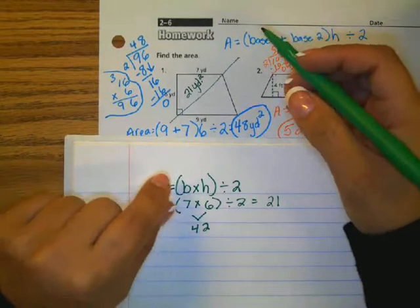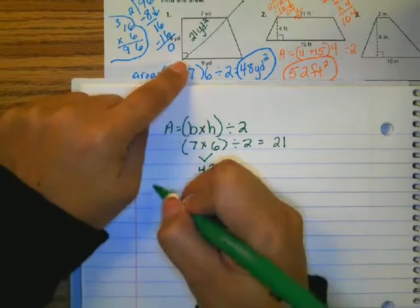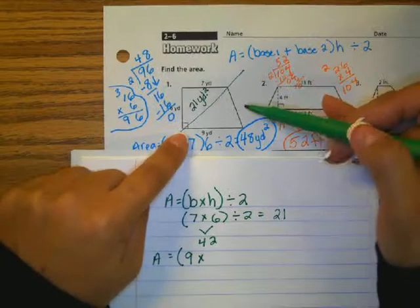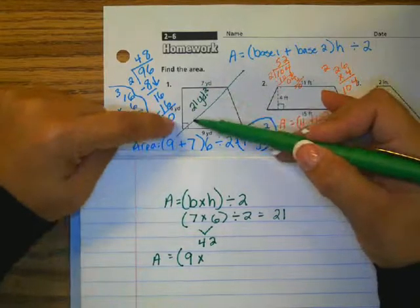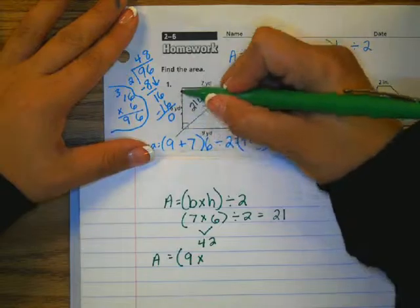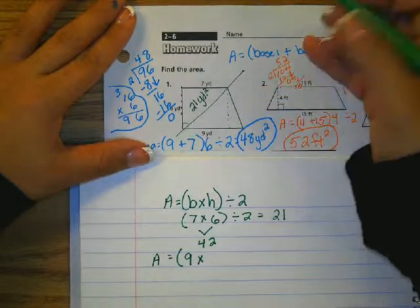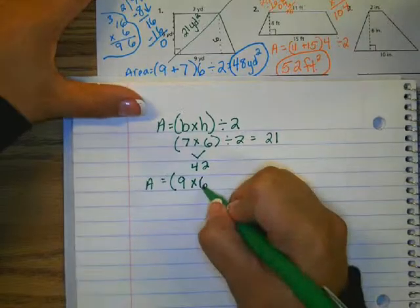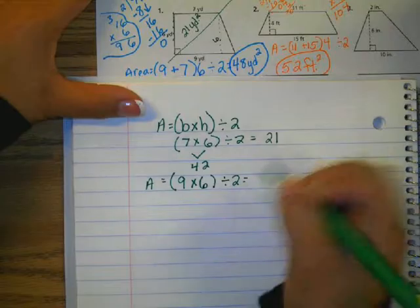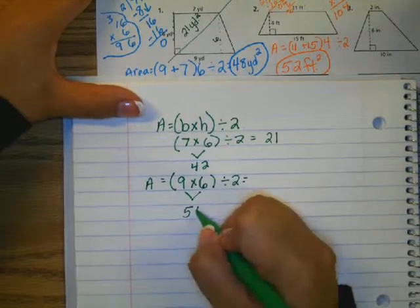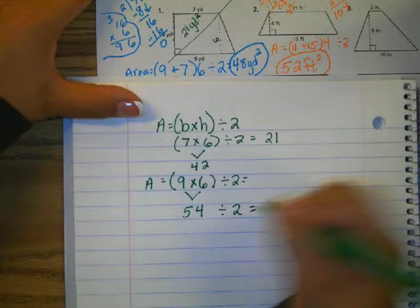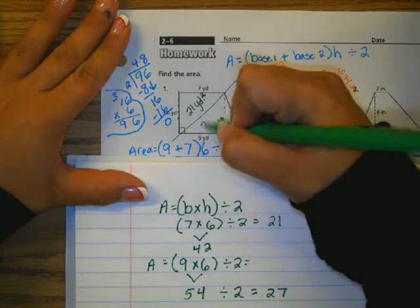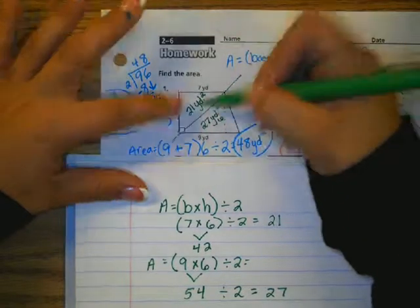Then I have to find the area of this triangle. So I know the base is 9. The height of this triangle is also 6 because this is my remaining triangle. So this tells me how high this one is. My height is 6, so I'm going to do 9 times my height of 6, divided by 2. 9 times 6 is 54. 54 divided by 2 is 27. Now I know the area of this triangle is 27 square yards.